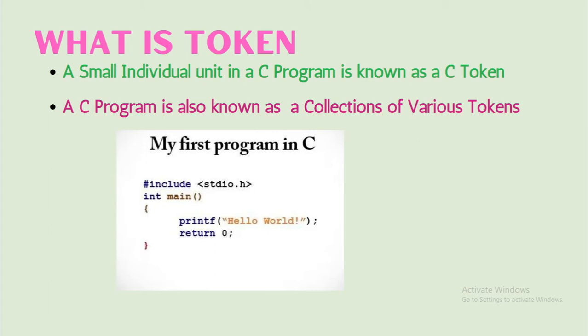First of all, before we learn about keywords, we must know about tokens also. A token is a small individual unit in a C Program. It is called a C token. Various tokens, or a collection of various tokens, is known as a C Program.